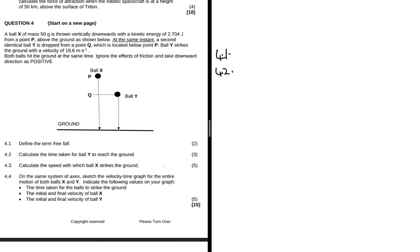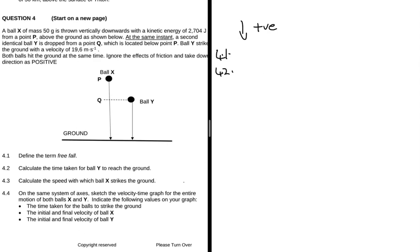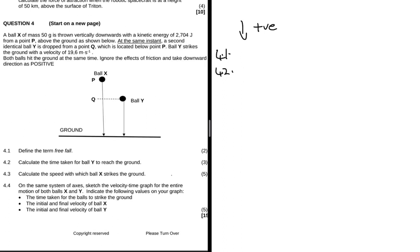Now we can move to 4.2. We're taking down as positive, right? We are instructed to do so. I usually take up as positive. 4.2 says calculate the time taken for ball Y to reach the ground.